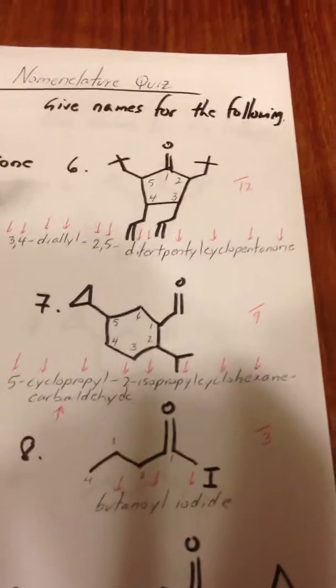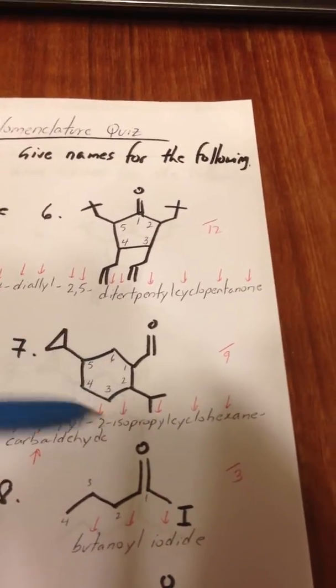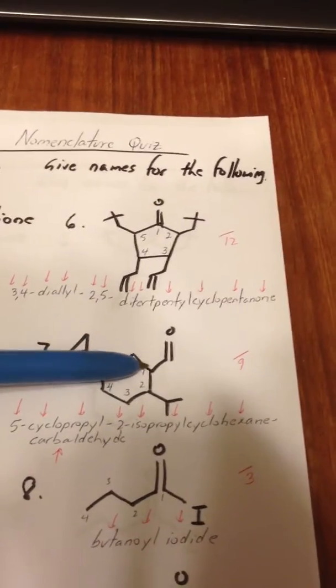This molecule has an aldehyde group, a cyclopropyl group, and an isopropyl group on a cyclohexane ring, so we'll call it, we'll number it starting from the aldehyde position.